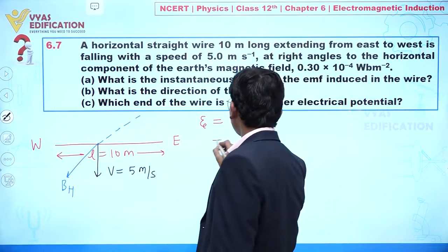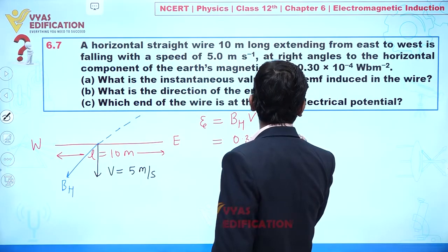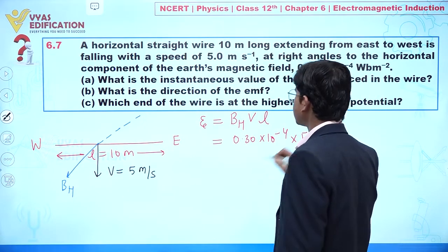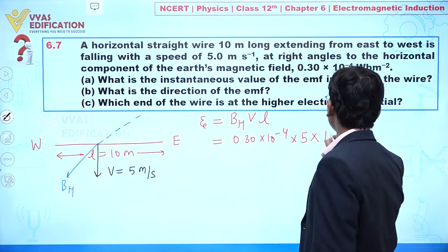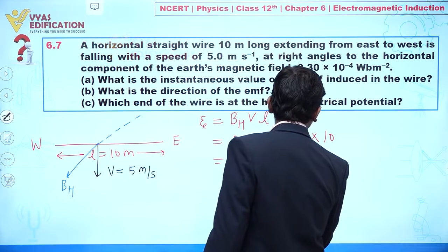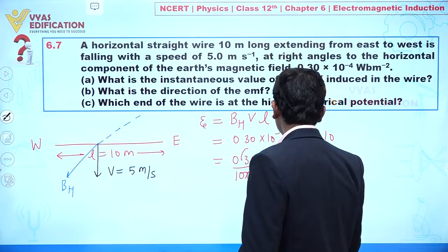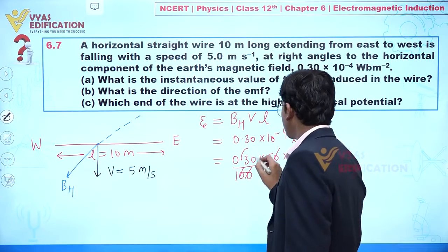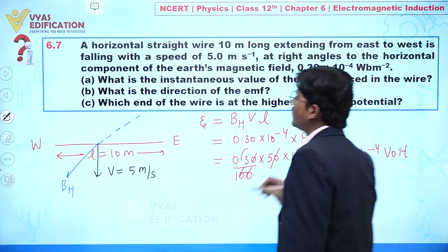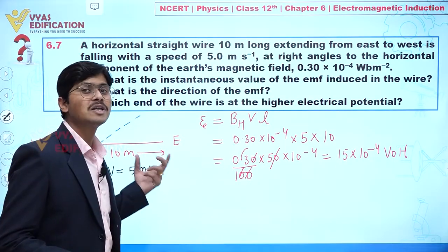So e = B_H × v × l. B_H is 0.30 × 10⁻⁴, velocity is 5 meters per second, and length is 10 meters. This gives 0.30 × 50 × 10⁻⁴, which simplifies to 15 × 10⁻⁴ volts. This is the instantaneous induced EMF — it is instantaneous because at this moment all three quantities are mutually perpendicular.